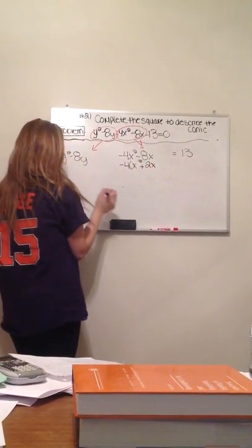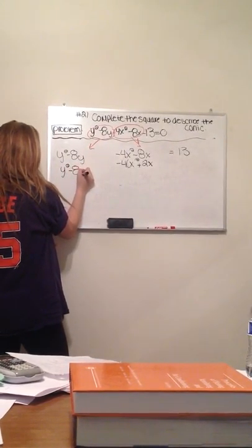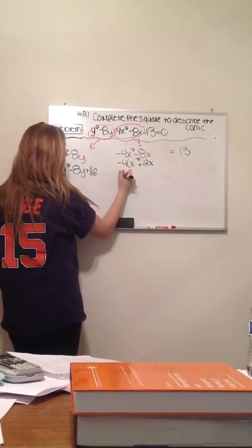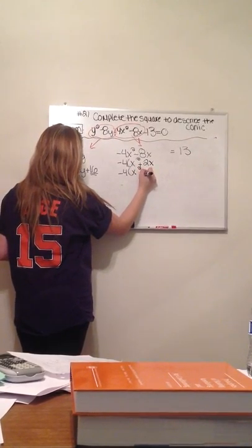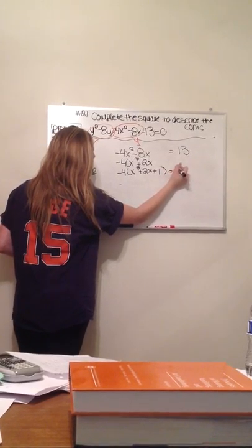Then we're going to complete the square, where this would be y squared minus 8y plus 16. And this would be negative 4x squared plus 2x plus 1 equals 13.